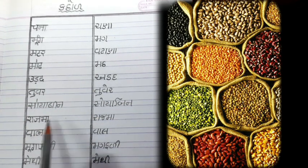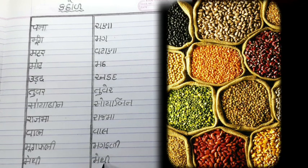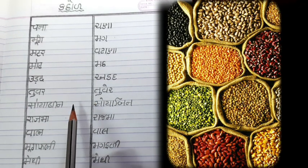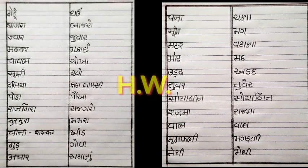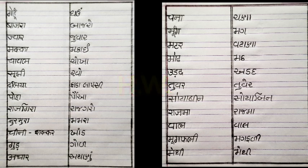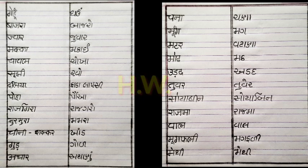કઠોળના નામ પણ લખવાના છે. મિત્રો, આજના વિડ્યો લેક્ચરમાં આપણે 'અનાજ' અને 'કઠોળ'ના હિંદી-ગુજરાતી નામ સીખ્યા. અત્યારે તમારી વિડ્યો સ્ક્રીન ઉપર દેખાય છે 'અનાજ' અને 'કઠોળ'ના હિંદી-ગુજરાતી નામ - એ ચોપડામાં લખો.